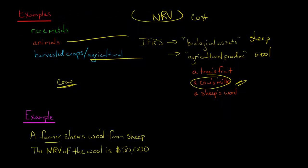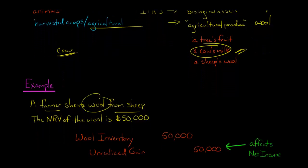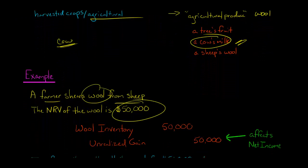Let's say we've got a farmer who shears some wool from their sheep. The net realizable value of that wool is $50,000. So the journal entry, we're going to debit wool inventory for $50,000.